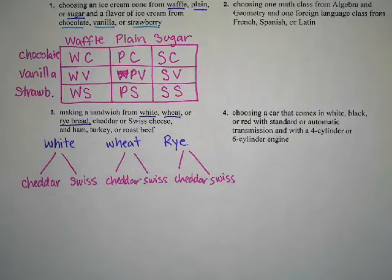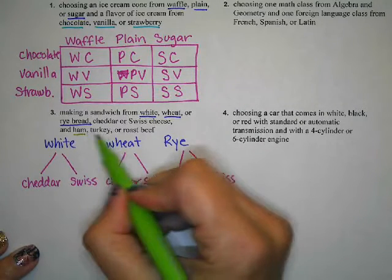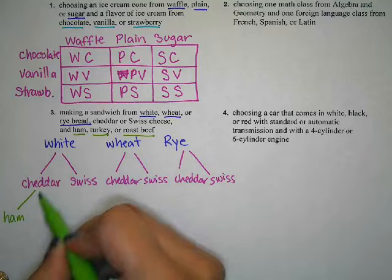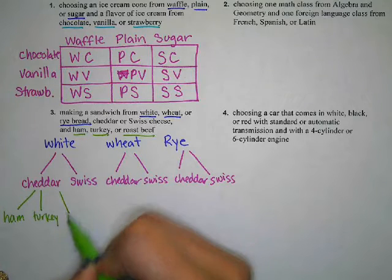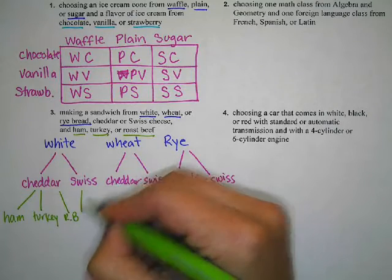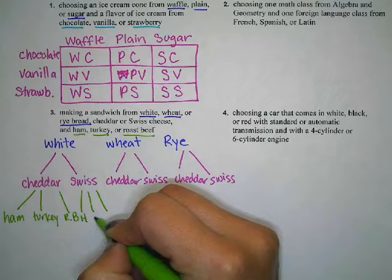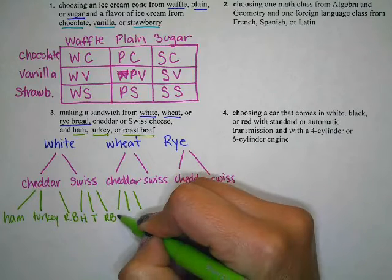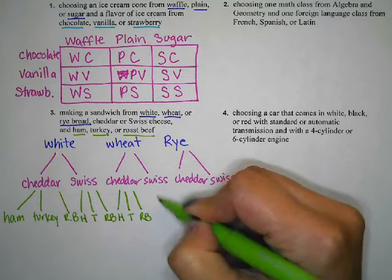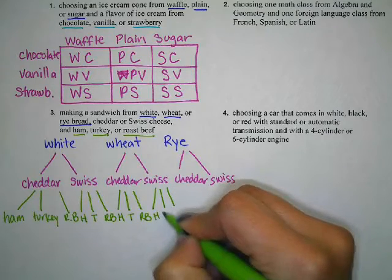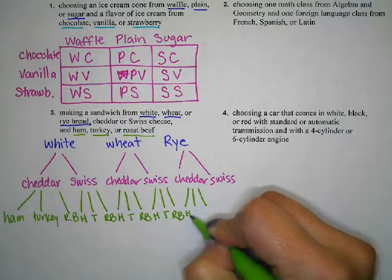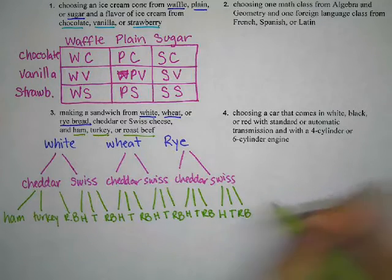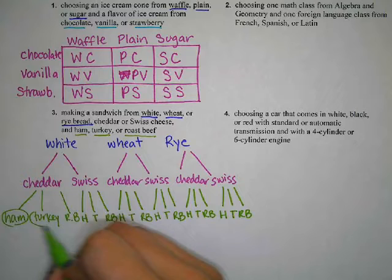Then for the choices of meat, we have ham, turkey, or roast beef. With white bread and cheddar we could have ham, turkey, or roast beef — we'll abbreviate roast beef as RB. Again three choices here: ham, turkey, roast beef. Three choices for each cheese branch — ham, turkey, roast beef — and three choices for this last one as well.